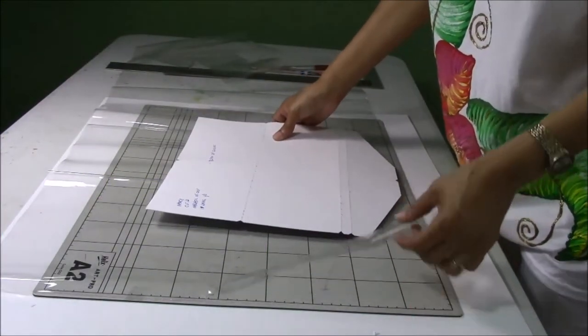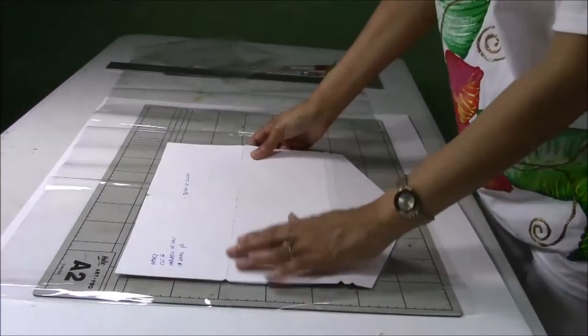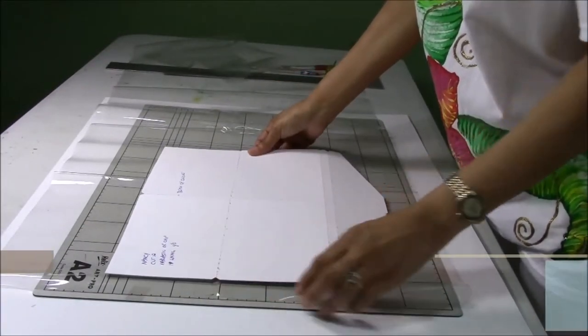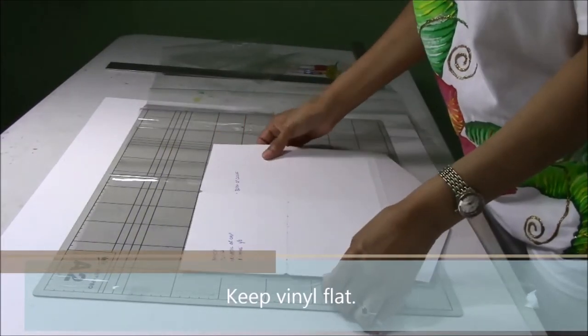Our next step is to cut our vinyls. So I've laid out my vinyl and I have my pattern. I'm just going to set this on top, I'm going to find a good place to put it, and then we're going to cut.